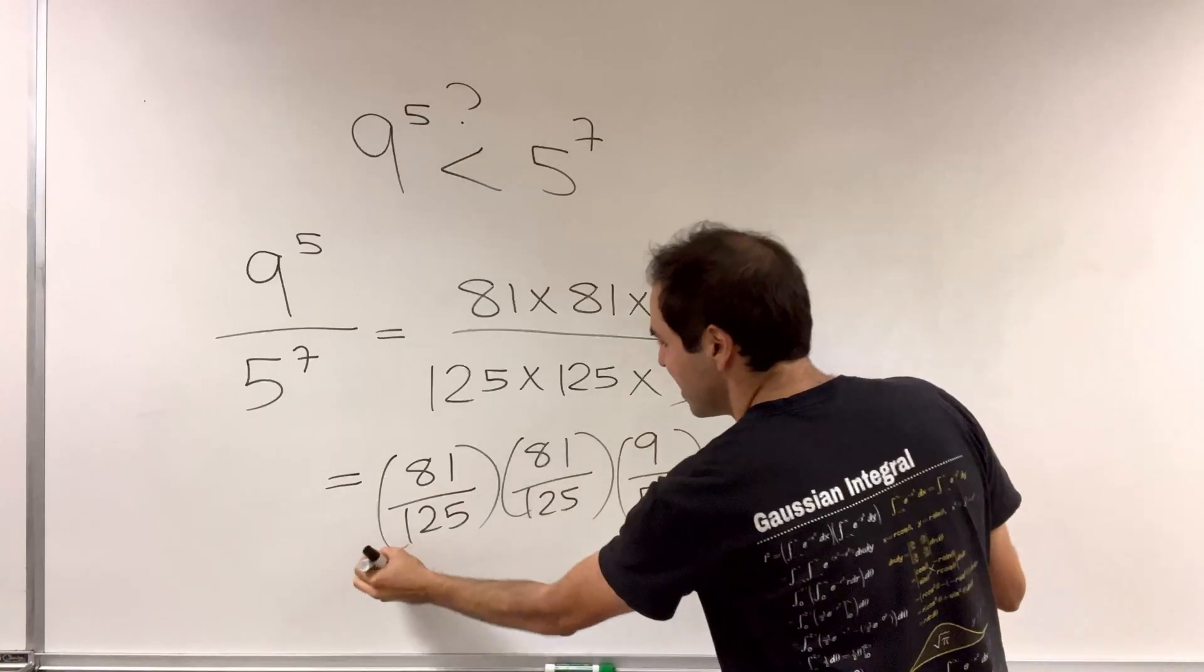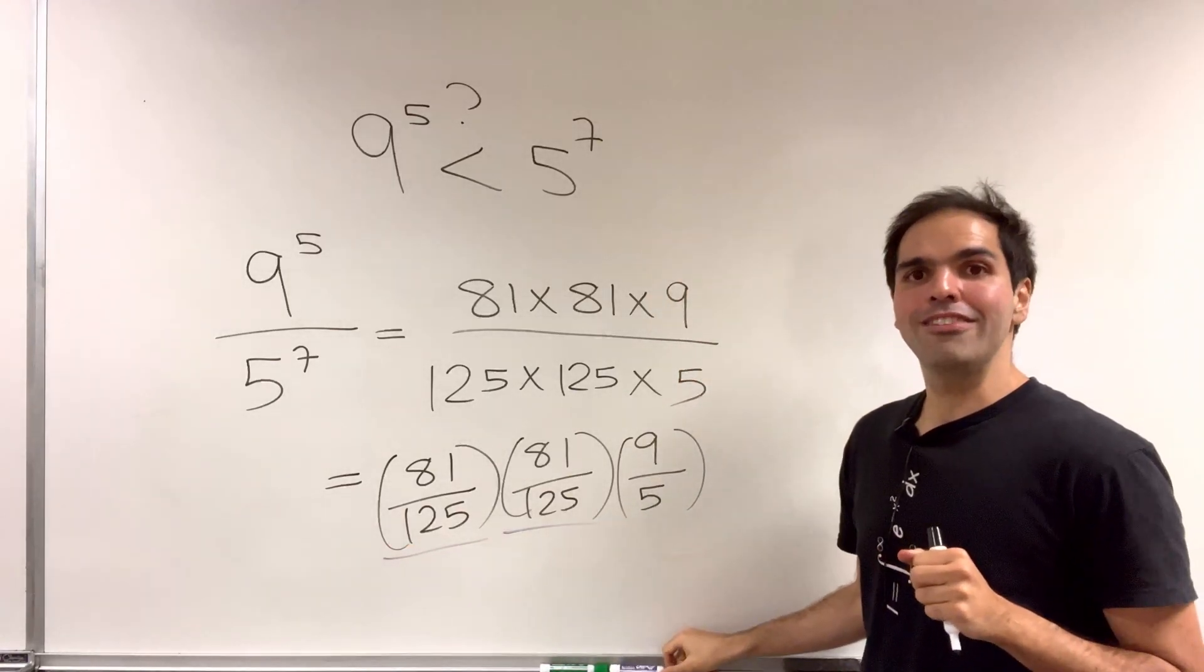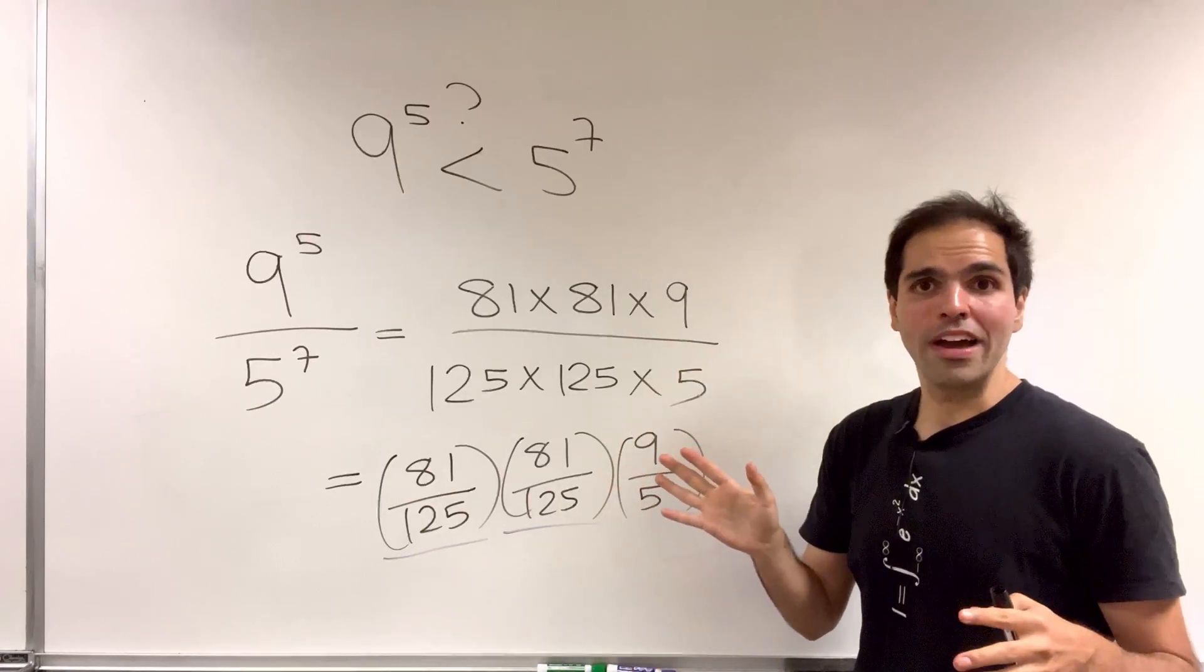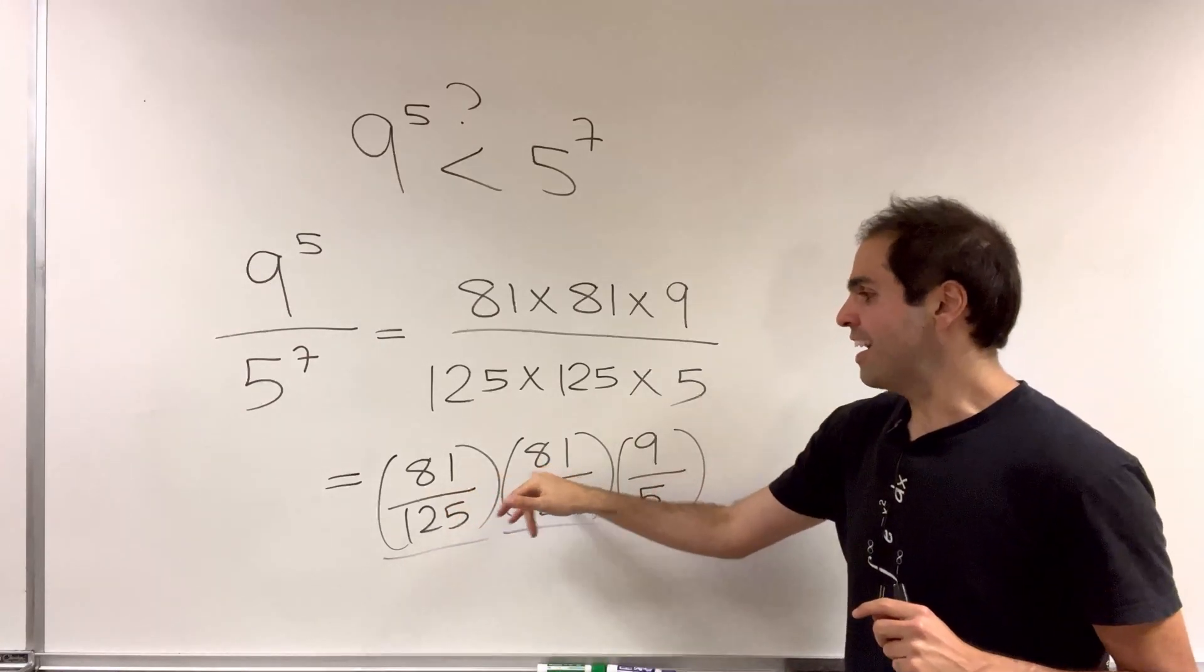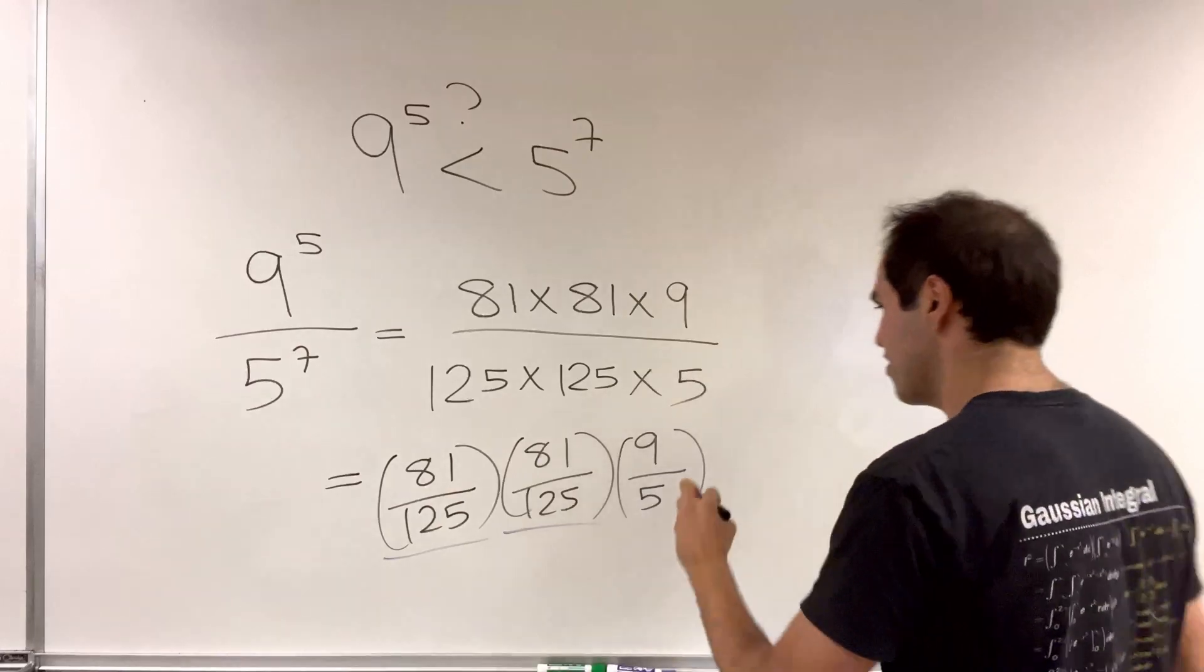But here's a trick that saves your day. So 81 over 125, that's roughly 80 over 120, which is 2 thirds. And in fact, you can check that each fraction is less than 2 thirds.